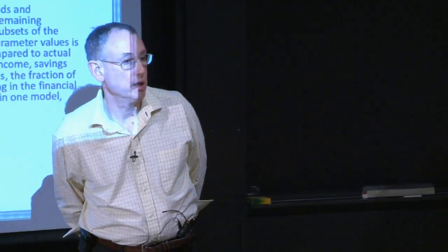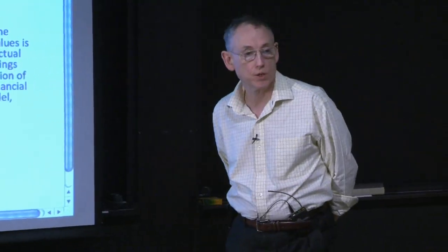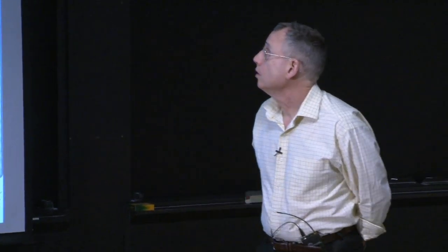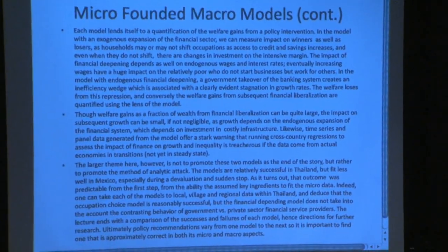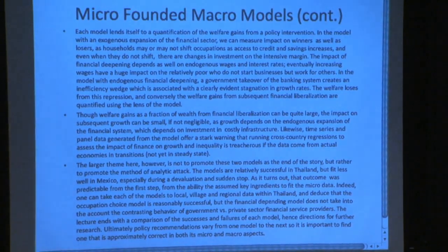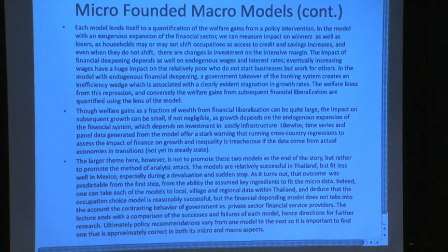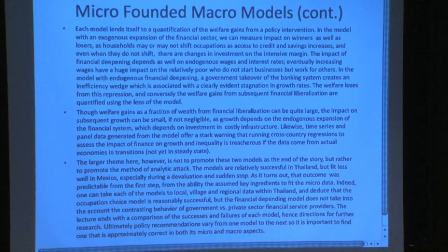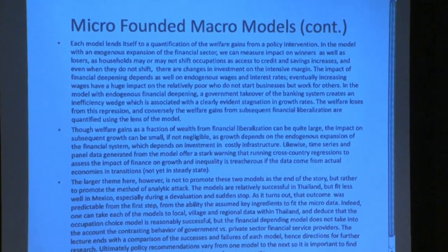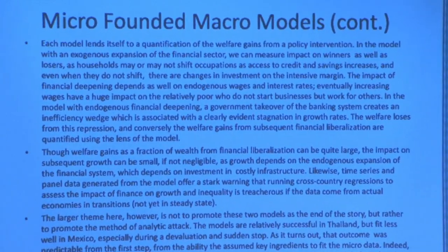In the first model, it's going to be the fraction of households running businesses, and the second one is going to be the fraction of households participating in the financial sector. After we get done looking at the goodness of fit, we can do welfare analysis of policy intervention.